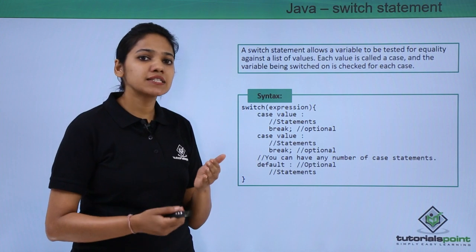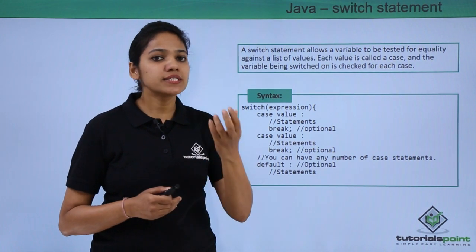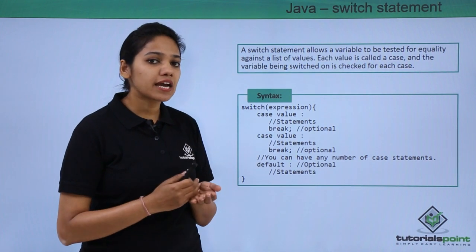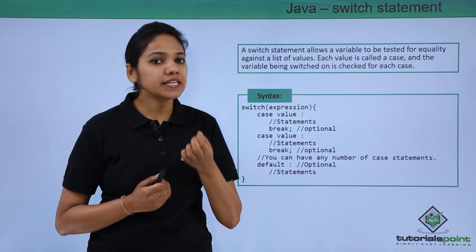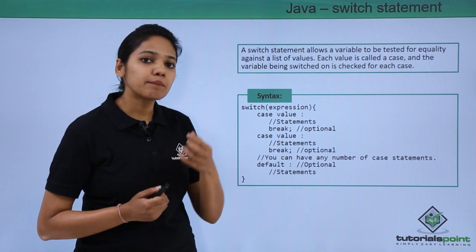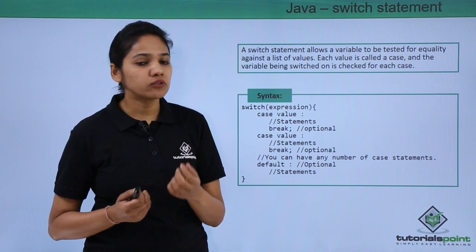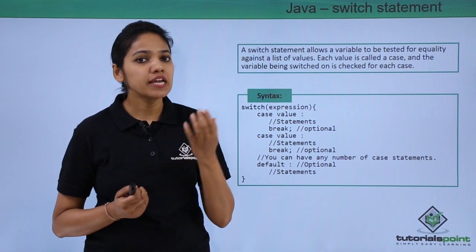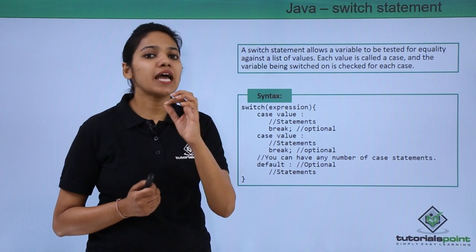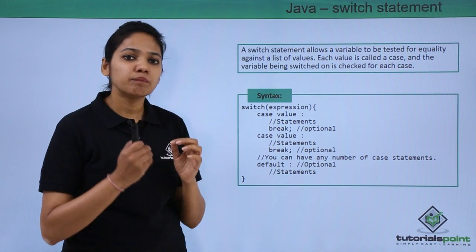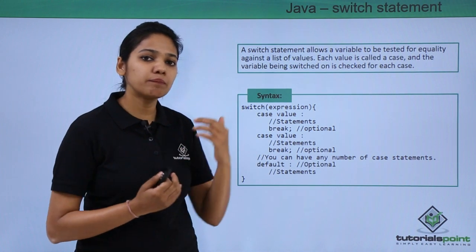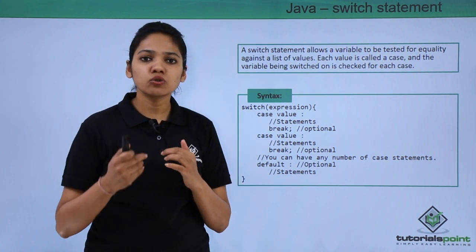For example, a student has received a report card with a certain grade — it may be A, B, C, D, and so on. The switch statement will go and check each and every case, where each case holds a value. So if the student has obtained grade A, print 'Excellent'; if grade B, print 'Very Good', and so on.